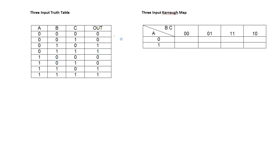Here's a 3-input Karno Map compared to the 3-input truth table. Each blank box represents one possible output, and the input for each is given by the variable value in its column and row. In the whole top row, A will be equal to 0. The values of B and C are given by the column headers. So this particular box would be where A is equal to 0, B is equal to 0, C is equal to 0. The numbers go from 00 to 01 to 11 to 10 — this is called gray code.